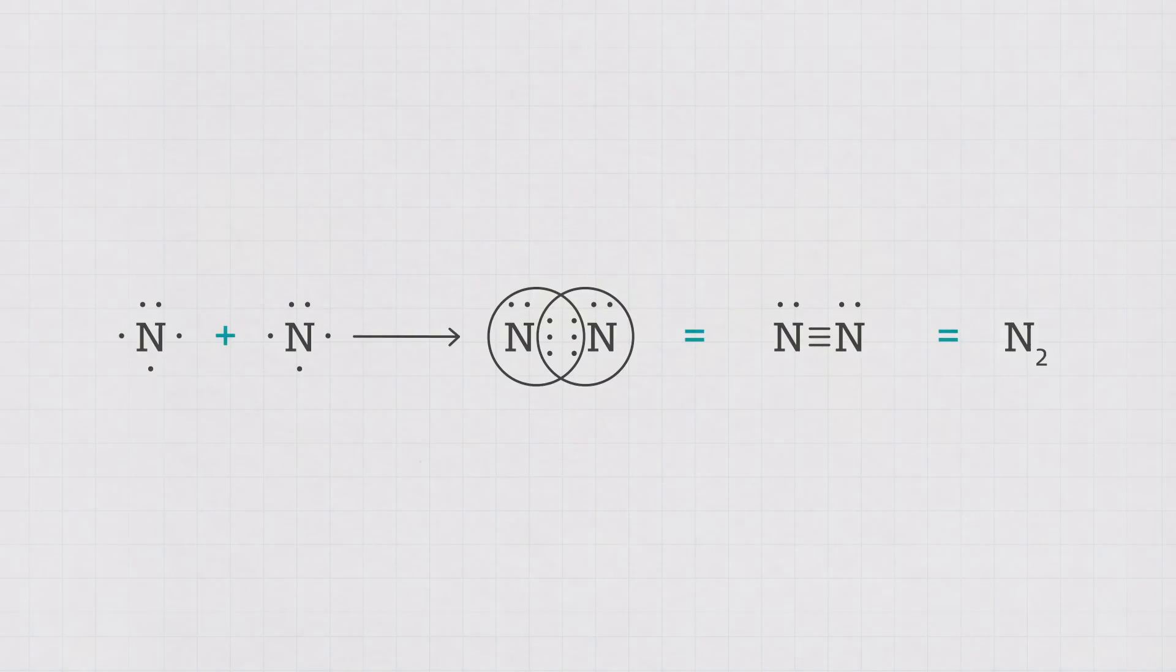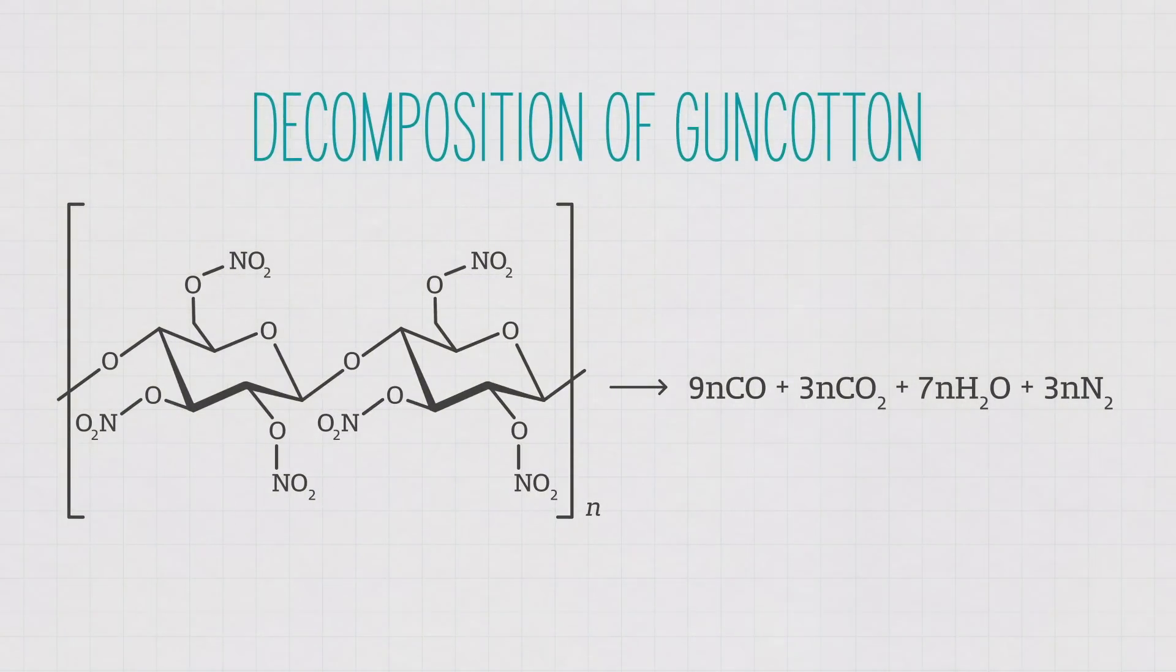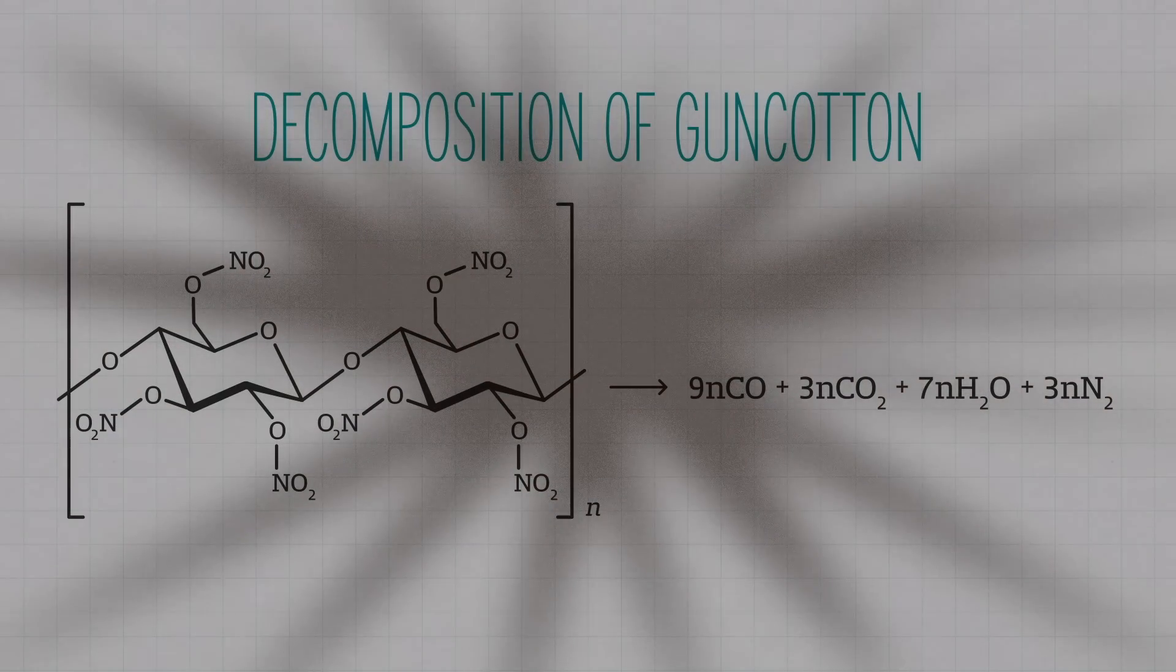Now, these three bonds require lots of energy to break, but also release lots of energy when they're formed. This decomposition of guncotton is called exothermic because the energy is released as heat. The released gases have a much greater volume than the starting solids do, so not only are they hot, but they rapidly expand. And that combo of heat and expanding gases, that's an explosion. And the properties that make cellulose great as an intentional explosive also make it really good at being unintentionally explosive, too.